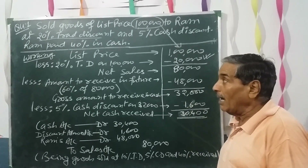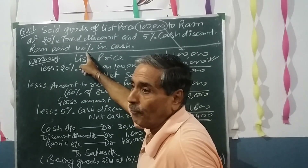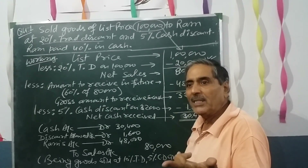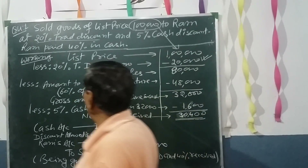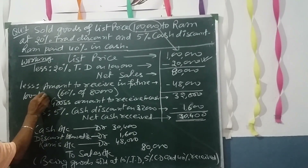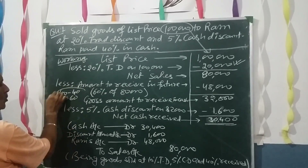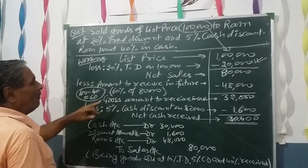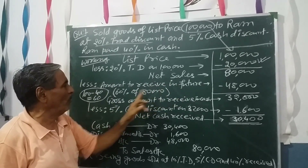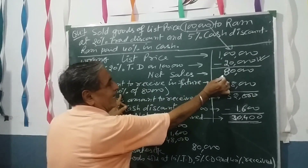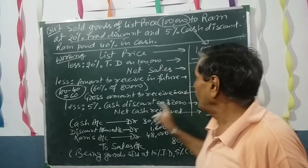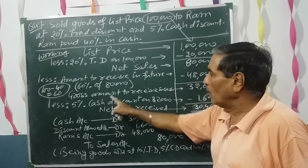Ram will pay only 40% right now, so he will pay 60% in future. From 100 subtracting 40 gives 60, so 60% is the amount to receive in future. This 60% of the net sales of ₹80,000 is calculated: 60% of ₹80,000 equals ₹48,000. After subtracting ₹48,000 from ₹80,000, you get the gross amount to receive in cash.